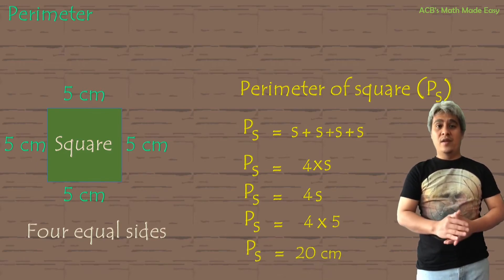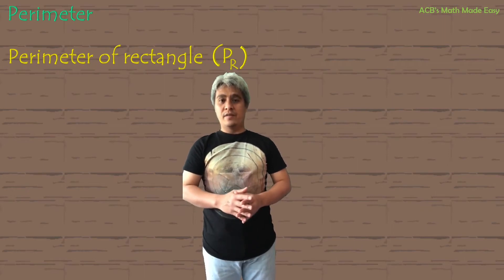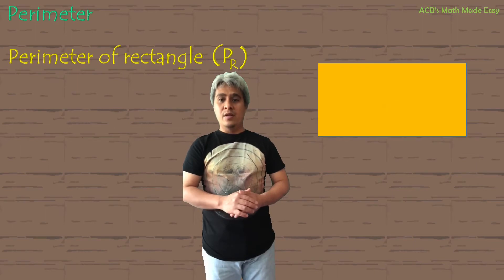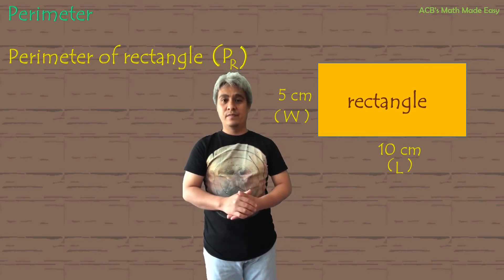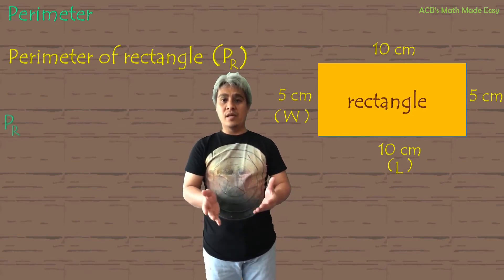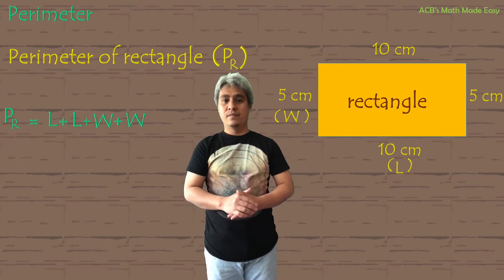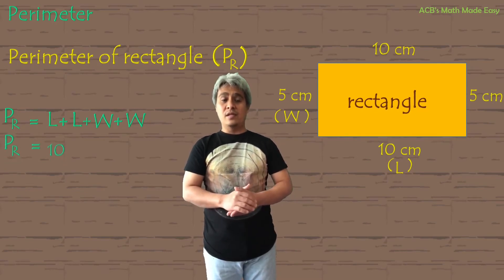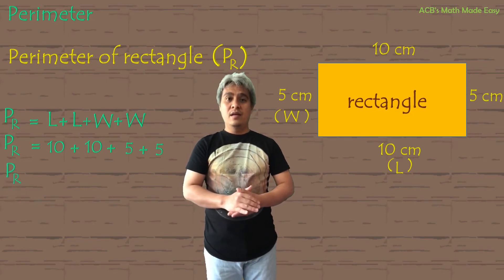We are now on the perimeter of a rectangle, and we will call it PR. This is our rectangle, and the width of a rectangle is 5 centimeters, and its length is 10 centimeters. So it means the other width is 5 centimeters and the other length is 10 centimeters too. Our formula of the rectangle is the same as the square — we will add all the sides: L plus L plus W plus W. Therefore, the perimeter of a rectangle is 10 plus 10 plus 5 plus 5, so the perimeter is 30 centimeters.